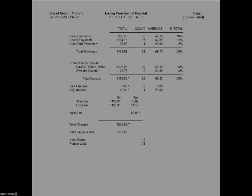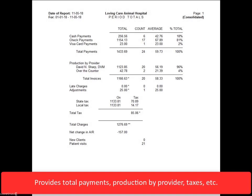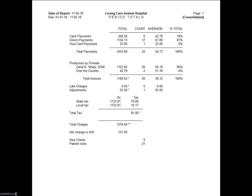The Period Totals report provides total payments, production by provider, taxes, and more. This is one of the most common reports printed at the end of the year. The information contained in this report includes totals for payment types — all payment types taken for the period, along with an account of how many times the payment type was entered into Avimark — as well as the average and percentage for each payment type.